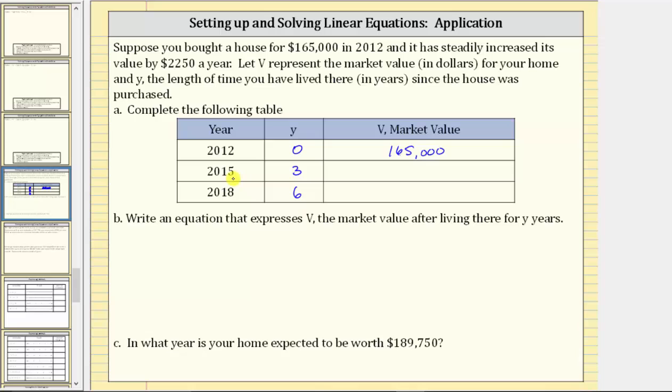In 2015 you've lived in the home for three years and it's increasing in value $2,250 each year. Therefore the market value is the initial value, $165,000 plus $2,250 times three. Again because it's increasing in value $2,250 each year.